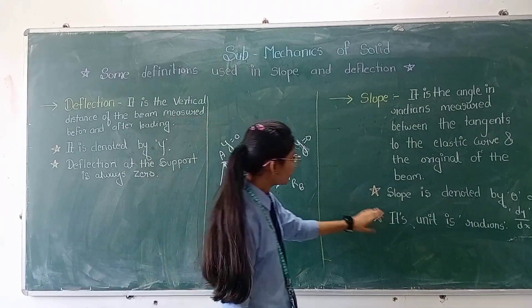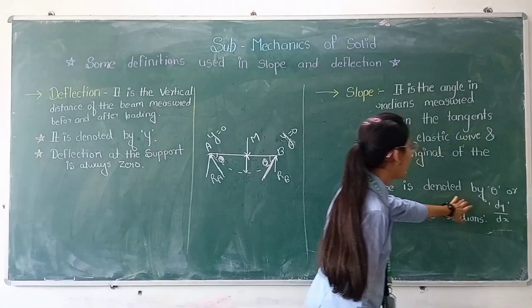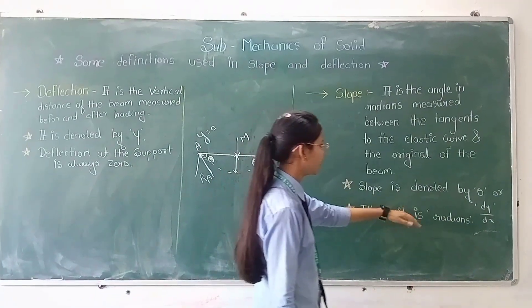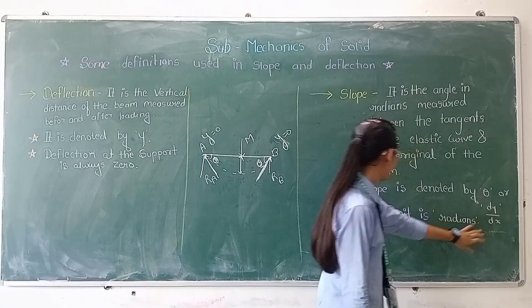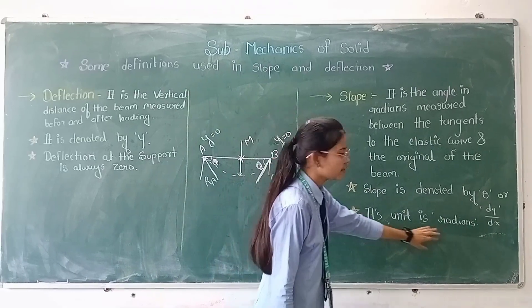So slope is denoted by theta, and I can write here dy by ds, and its unit is radians.